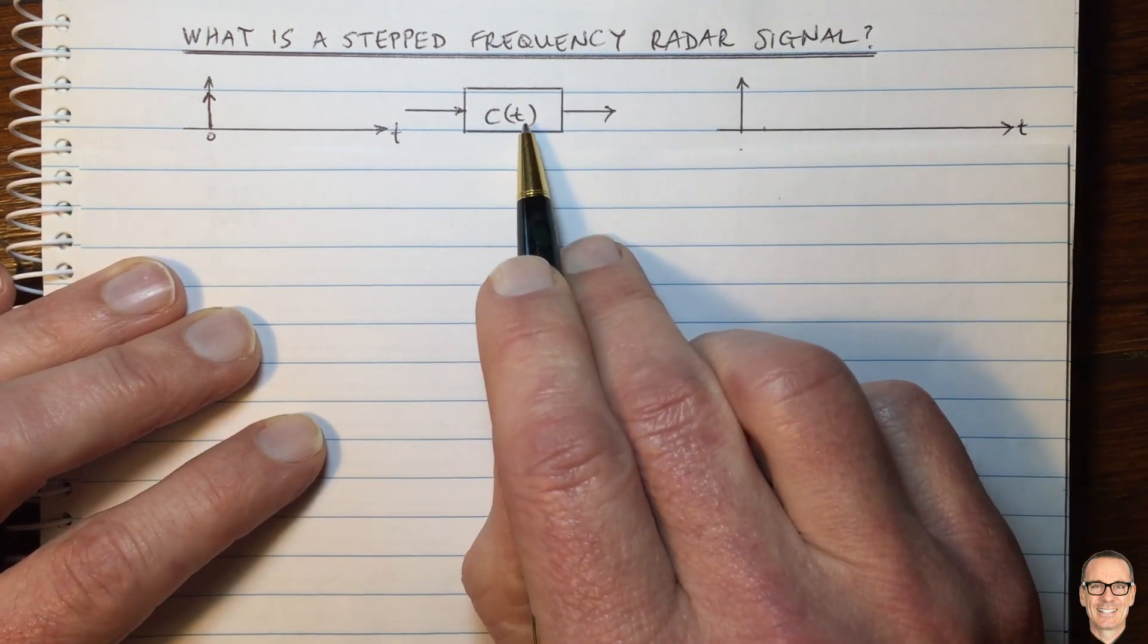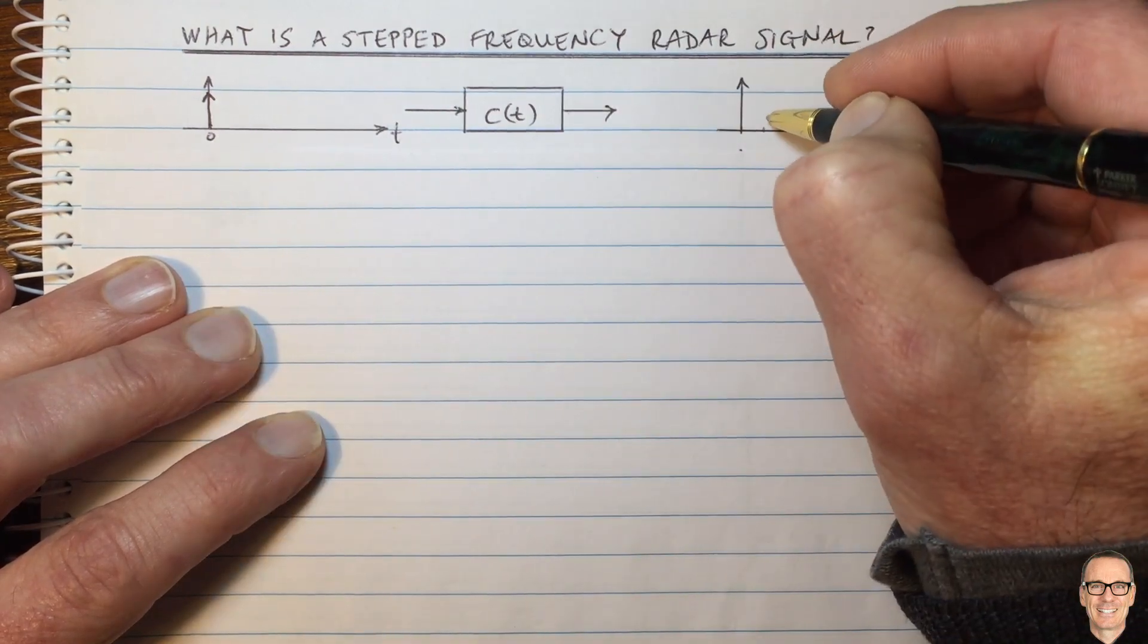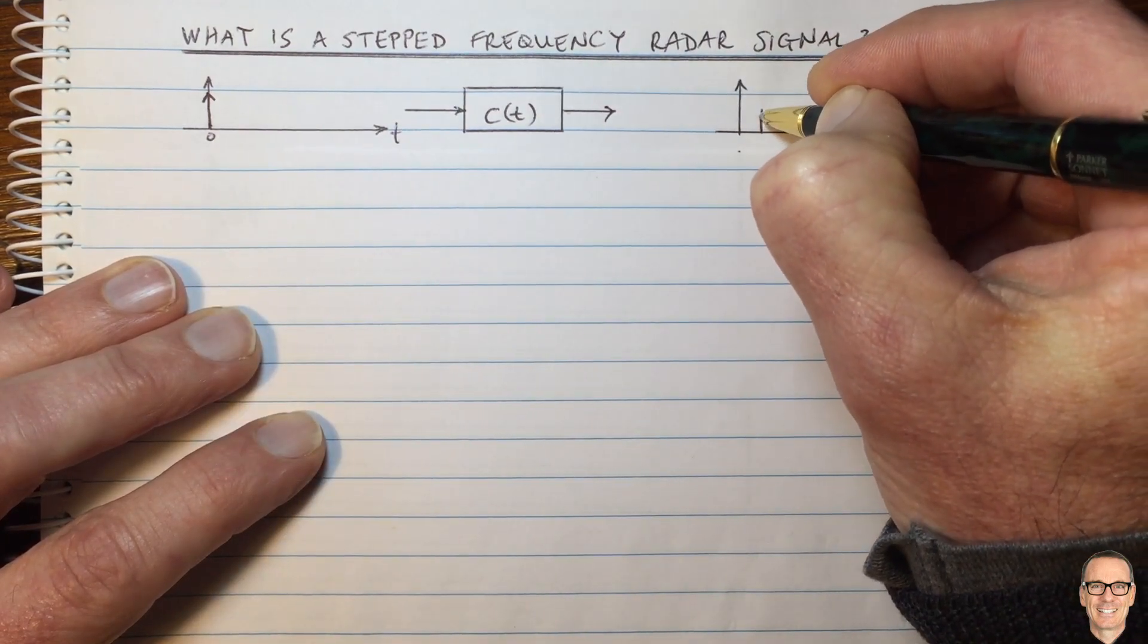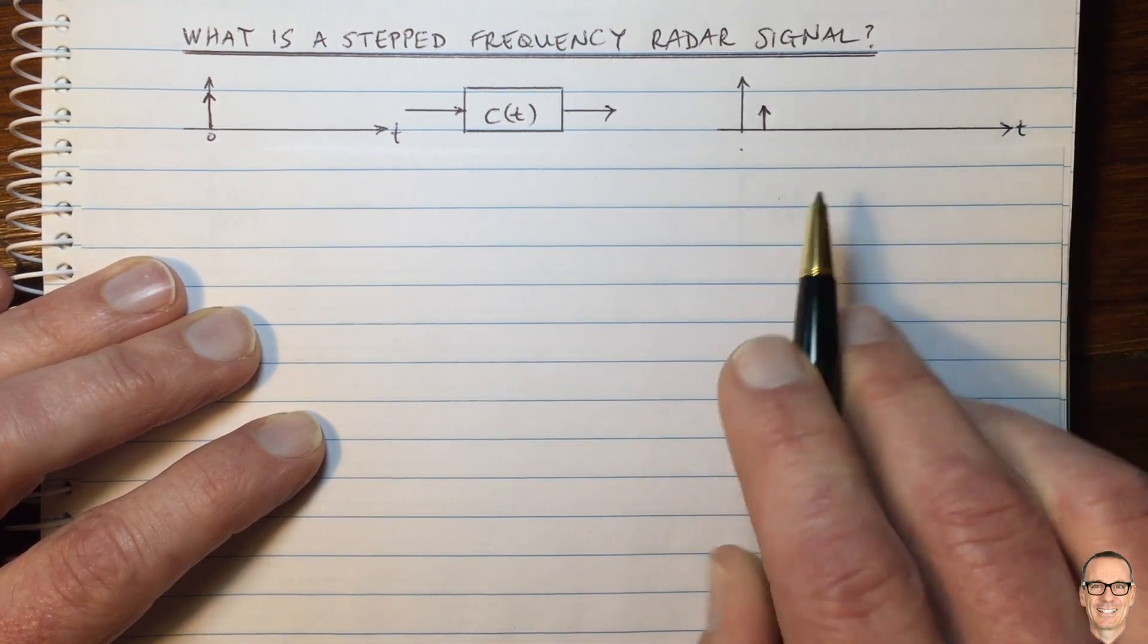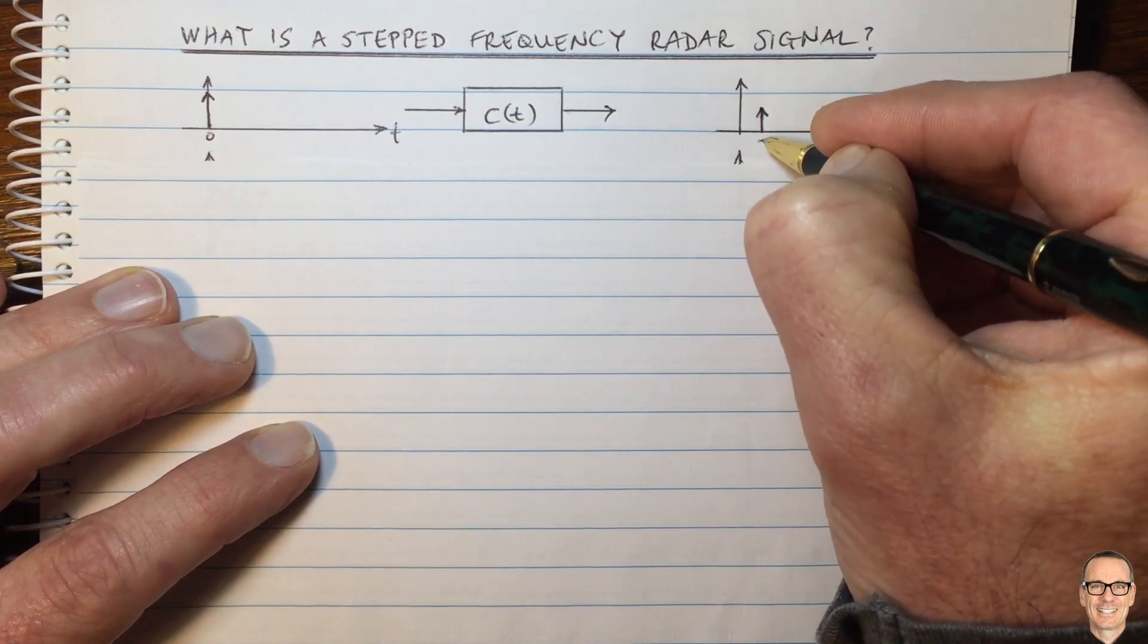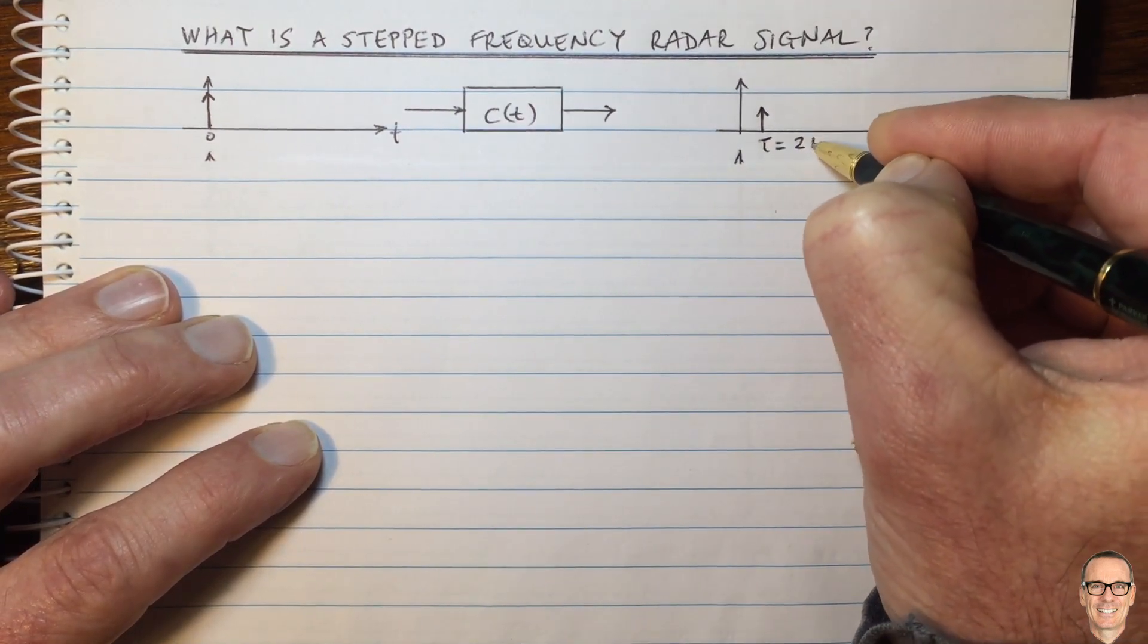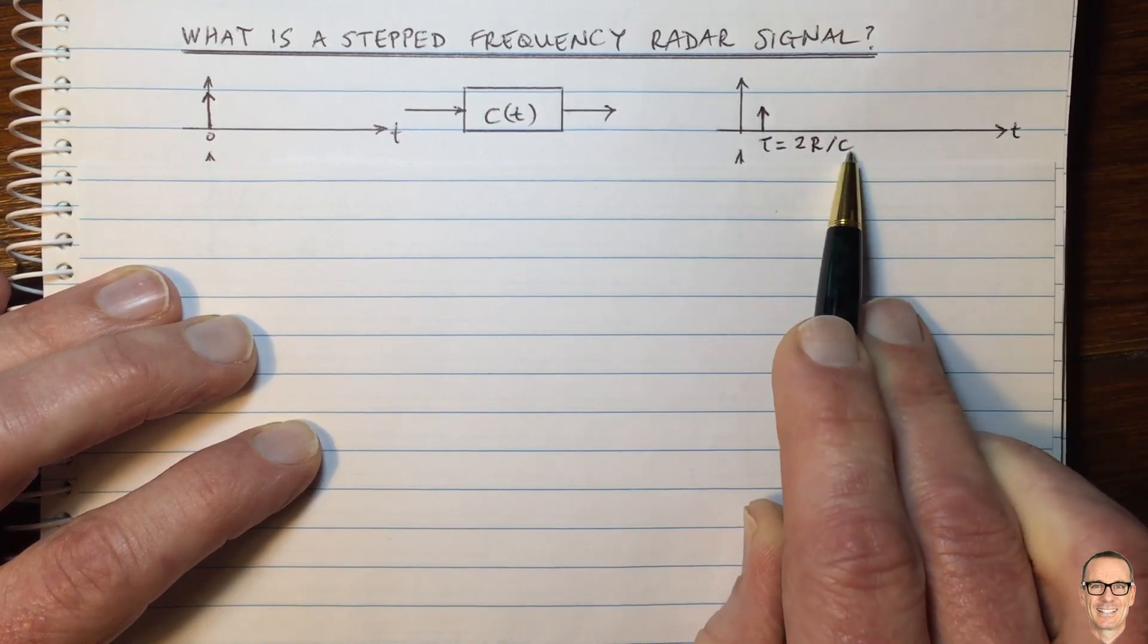For example, if there was only one reflector, then the impulse would come back to us at a delayed time. And we would have a received signal that looks like this, where this delayed time TOR would equal two times the round trip delay divided by the speed of light.